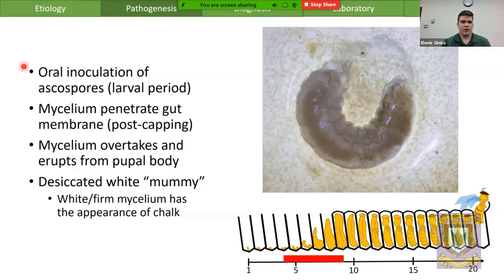The fungal fruiting bodies produce a great number of very resilient ascospores which are easily transmitted throughout the hive. Nurse bees will accidentally pick these up and feed them to larvae. In the right-hand corner here we have a one-day-old hatched larva — the queen lays an egg, after three days that egg will hatch, and this is what hatches out.